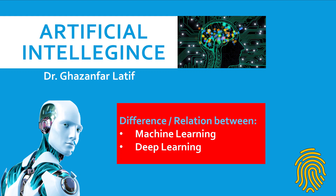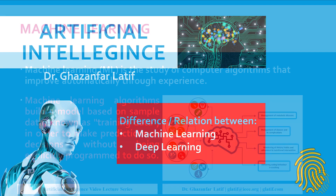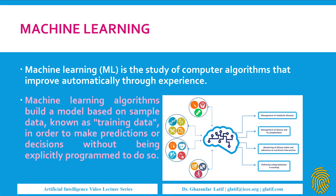In machine learning, decisions are taken by providing a list of features. For example, if we need to recognize a face based on given images, we extract features of the face — such as the shape of the eye, size of the eye, size of the nose, size of the lips, shape of the lips, color of the face, and size of the face. These are the features extracted from the images.